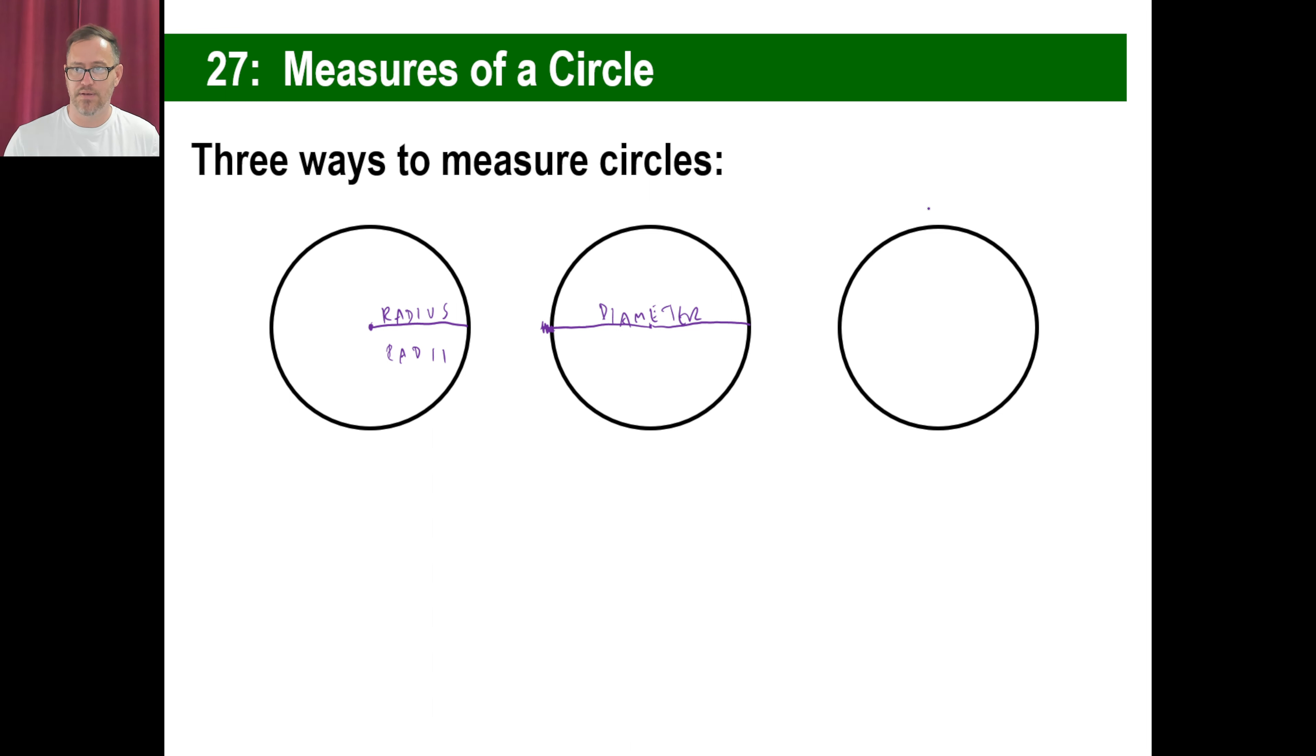The other, if you were to take, let's say, a piece of string or something, or a tape measure that bent, and you could take it around a circle like this, and start at one point, and go all the way around the circle, and then stop right there at the very end. That is called the circumference. Okay, there you go.